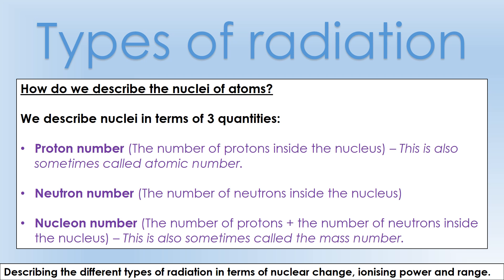We describe nuclei using three quantities: proton number (the number of protons inside the nucleus, also called atomic number in chemistry), neutron number (the number of neutrons), and nucleon number (protons plus neutrons, also called mass number or relative atomic mass in chemistry).